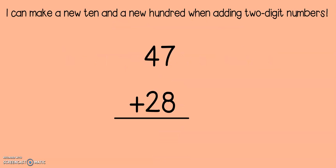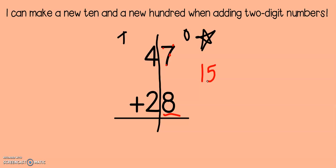Here's our first problem today: 47 plus 28. Just like in previous problems, if you like to put your line down the middle to separate the tens and the ones, you can do that. We always start with the ones. I'm going to use touch points to add 8 plus 7: 8, 9, 10, 11, 12, 13, 14, 15. If I have 15 ones, did I make a new ten? Yes, I did. So I put my new ten in the tens column, and I bring my five ones down to the bottom.